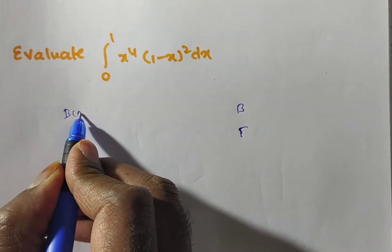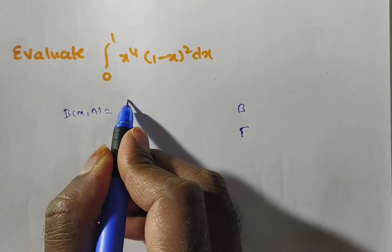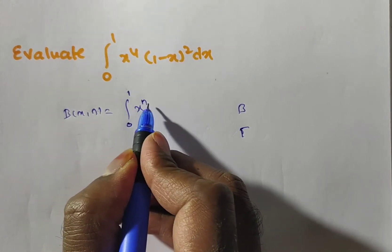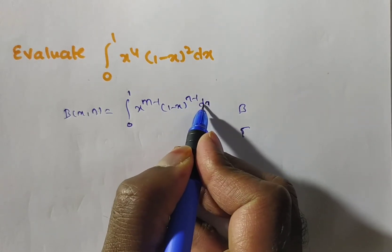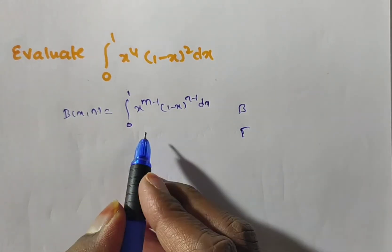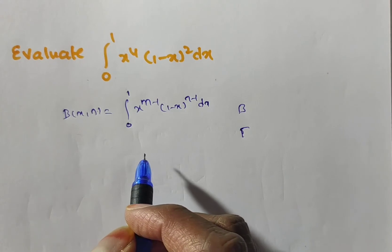What is the definition of beta of m comma n? Beta of m comma n is equal to integral 0 to 1 x to the power of m minus 1 into 1 minus x to the power of n minus 1 dx. So, from this we have to evaluate this.